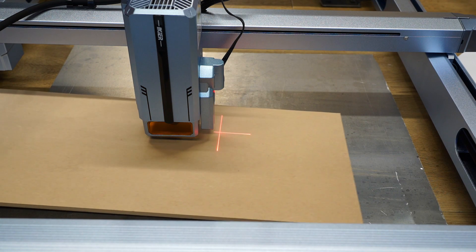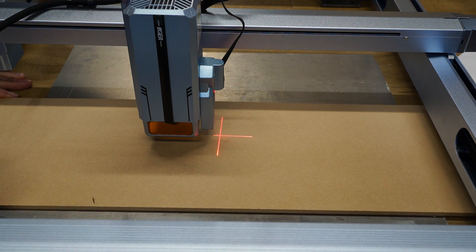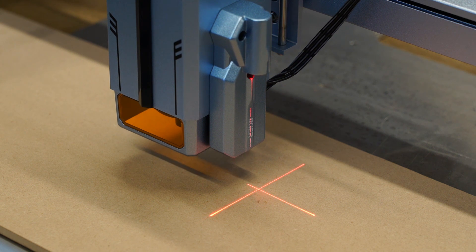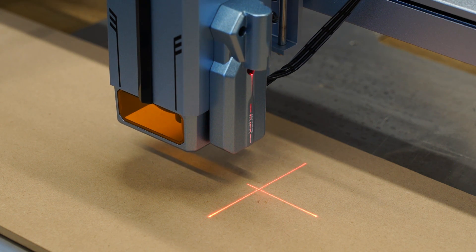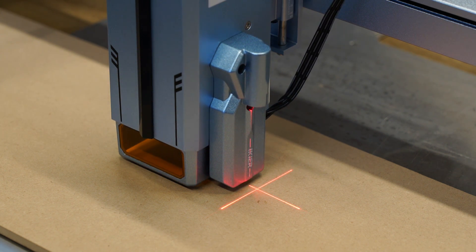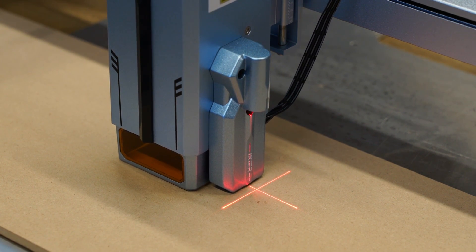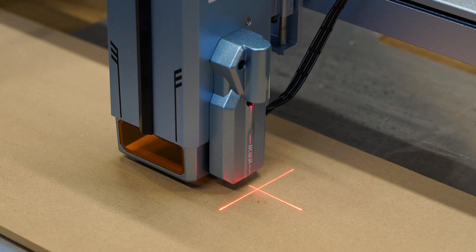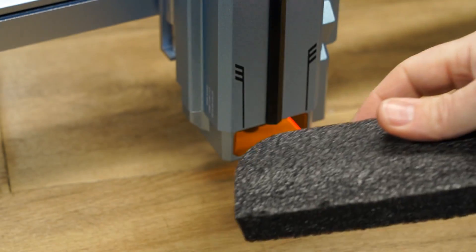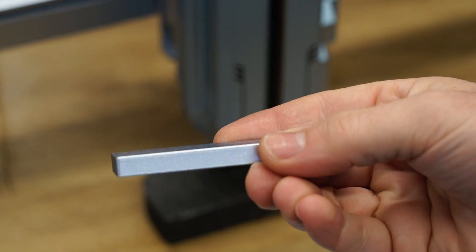To use the autofocus feature, place your material under the laser, and then press the autofocus button in Lightburn. The laser will probe the material, and then lift the laser head to the correct height to allow for cutting or engraving. It's worth noting that soft compressible materials aren't compatible with the autofocus feature. Instead use the measuring block included with the K1.